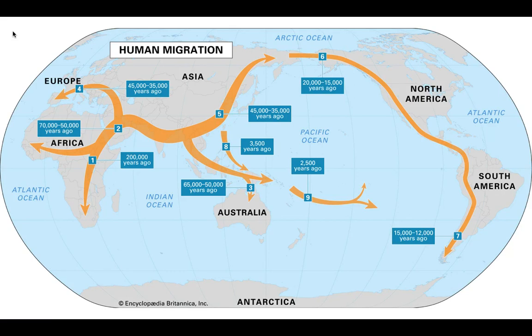The next migration was number four — Europe, 45,000 to 35,000 years ago. The big journey is shown in five and six: they reached Eastern Asia 45,000 to 35,000 years ago, then traveled through Asia and over the land bridge into North America 20,000 to 15,000 years ago. From there, they still had a long way to travel to reach the southern tip of South America, but this occurred over thousands of years — they didn't do it all at once.